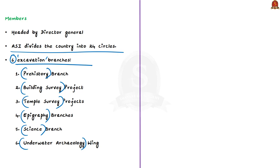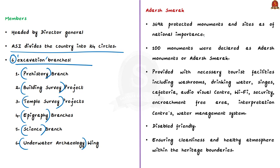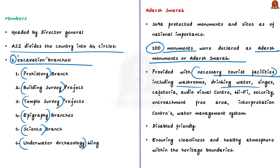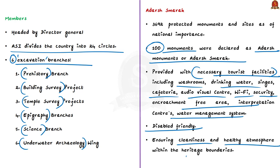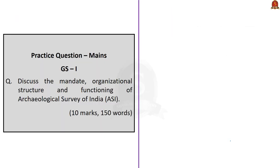Out of around 3,692 protected monuments and sites of national importance, 100 monuments have been declared as Adarsh Smarak. Under Adarsh Smarak, monuments are provided with necessary tourist facilities including washrooms, drinking water, cafeteria, audio-visual center, Wi-Fi, security, and other facilities, and are also to be made disabled-friendly. Under Swachh Bharat, cleanliness and a healthy atmosphere is maintained within heritage boundaries and archaeological sites. These are some of the important details with reference to the Archaeological Survey of India — covering its brief history, overview, and functions.